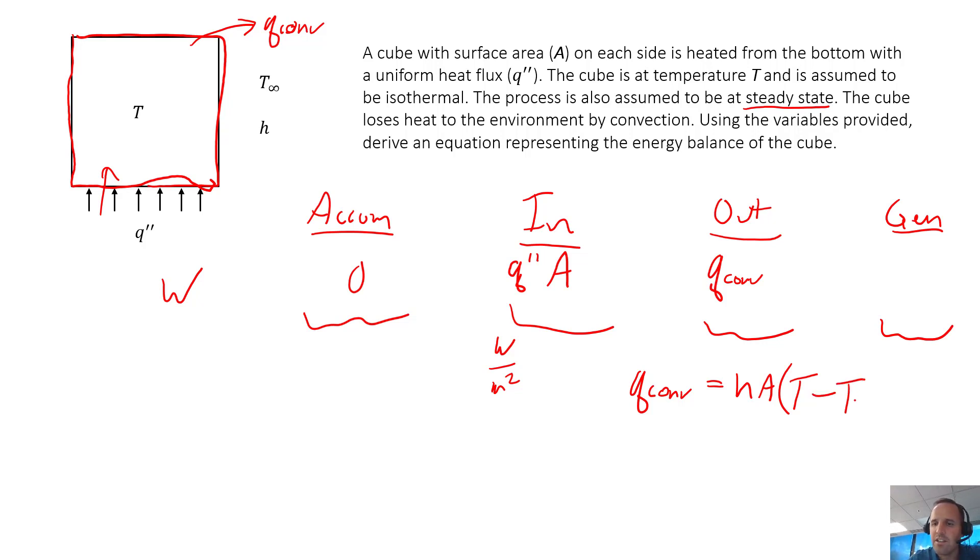As a reminder, h is the convective heat transfer coefficient with units of watts per meter squared per kelvin. Area is our total area for heat transfer with units of meters squared. We're actually using area as a more specific variable in this problem where the surface area represents one side.